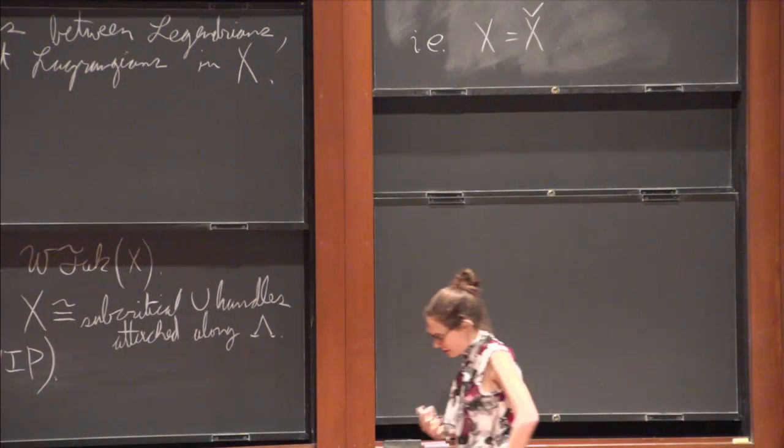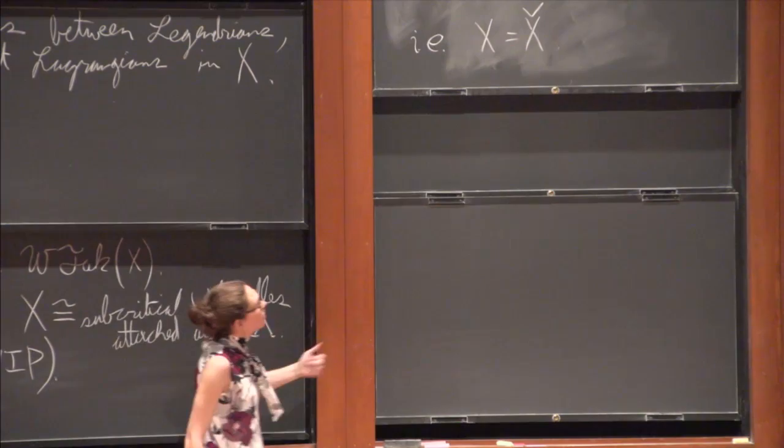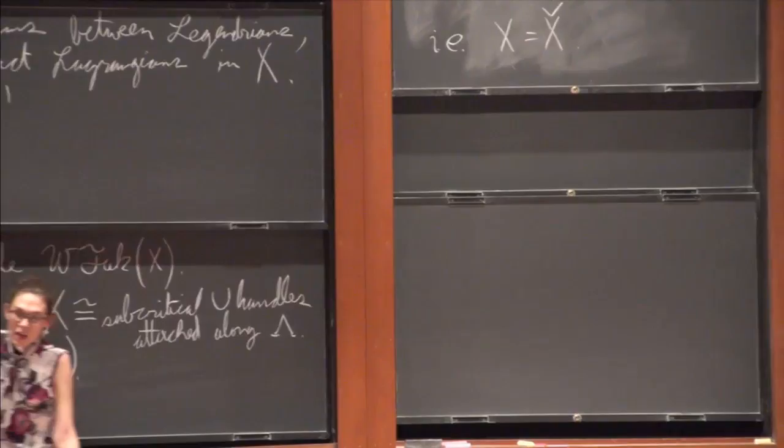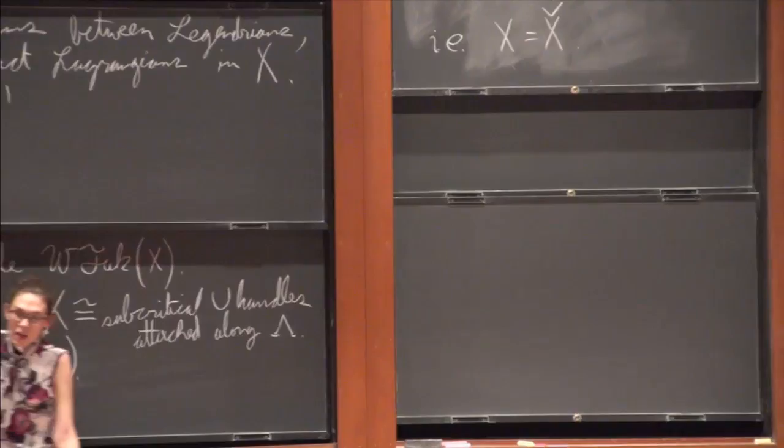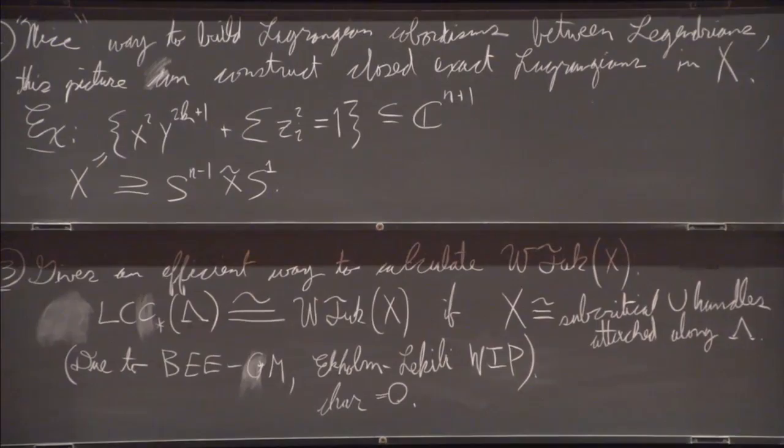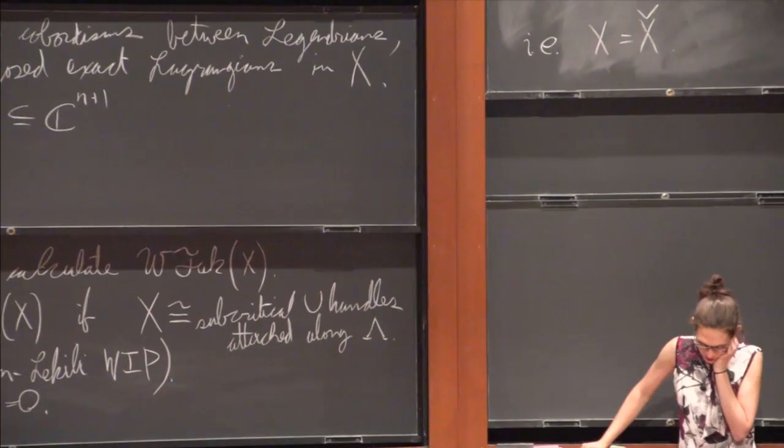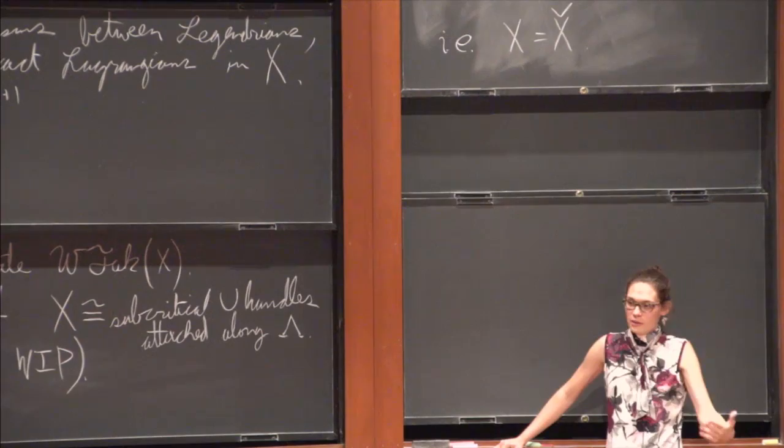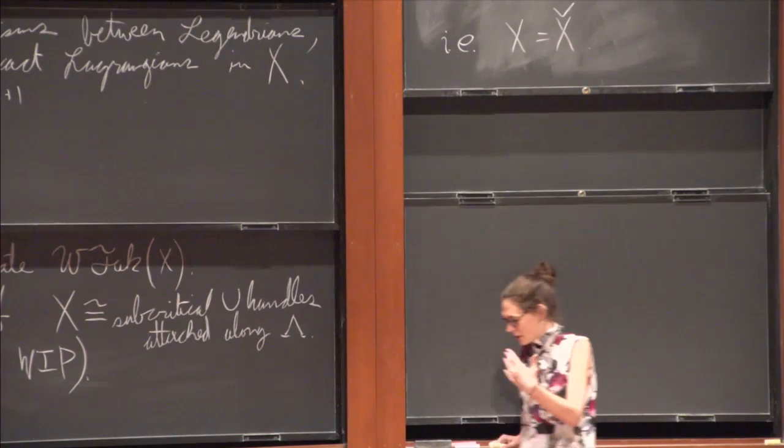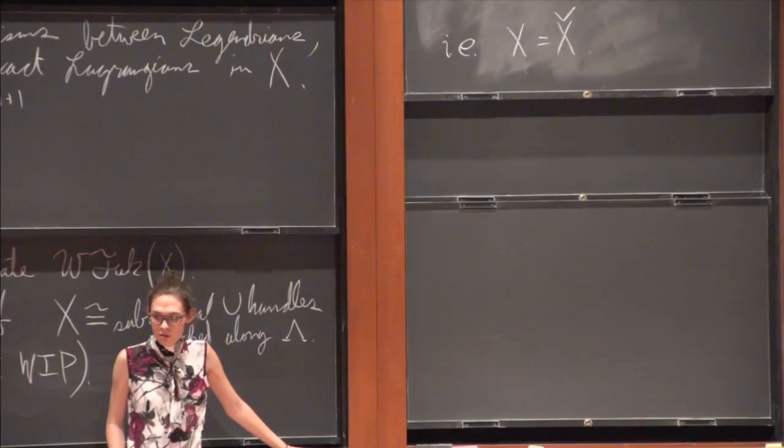In general there's sort of an algebraic obstruction that I have no idea how to solve, which is that because what this actually does is computes the Fukaya category, not dFuk. Now in terms of constructing mirrors, there's still kind of a problem that if we calculate the wrapped category and it's a non-commutative category, I have no idea whether or not this is Morita equivalent to a commutative category. And so it's not clear whether the mirror should be like a commutative space or not.